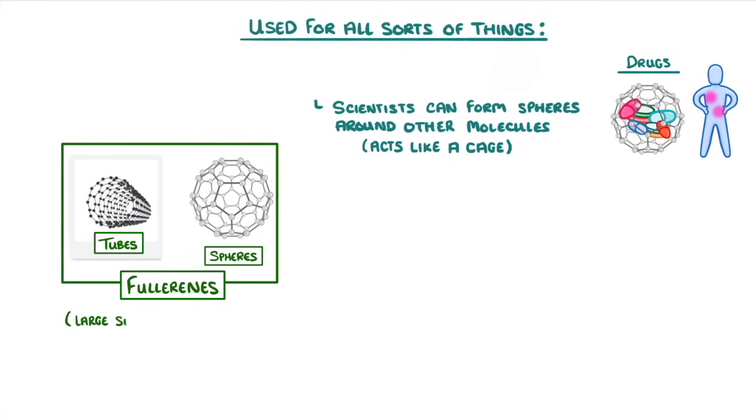Or because fullerenes have a large surface area to volume ratio, as all tiny things do, they could be used to make industrial catalysts, which are used to speed up the rate of chemical reactions.